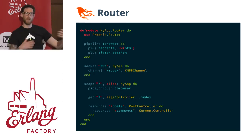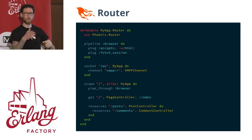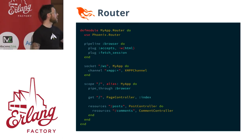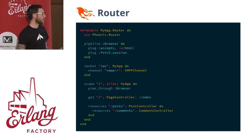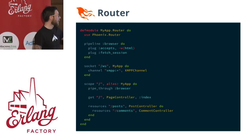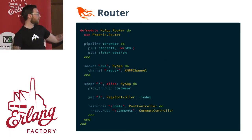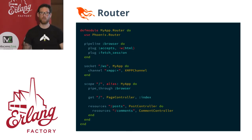plug fetch_session will actually fetch the session information from the cookie and things like that. Down here we have scopes — you can say scope slash, which will be the root of your application, and you'll pipe through the browser pipeline. You can have multiple pipelines, which is really nice because you can craft routes that only have what you really need. We have resources — resources /posts goes to the post controller, and in a do block we can have nested resources like resources comments, comment controller.